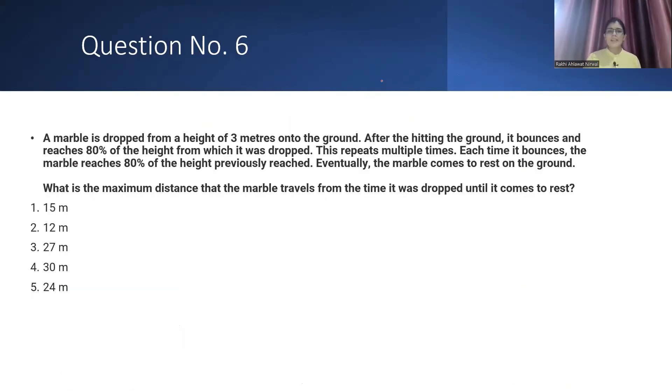Now question number 6. I will read it quickly. You should pause the video and try to solve the question. I will tell you a wonderful trick for this. The answer will come in hardly 20 seconds. A marble is dropped from a height of 3 meters onto the ground. After hitting the ground, it bounces and reaches 80% of the height, which is 4 by 5. It comes here, goes back, then 4 by 5 of that height again. Eventually, the marble comes to rest on the ground.